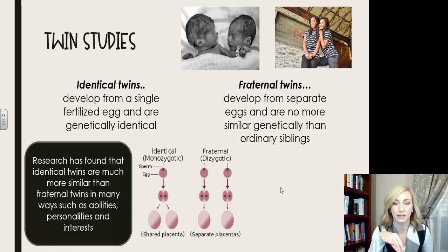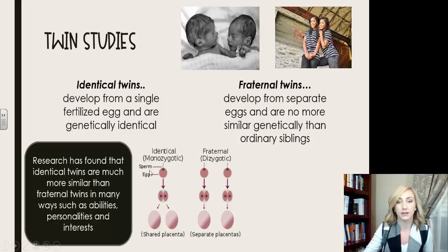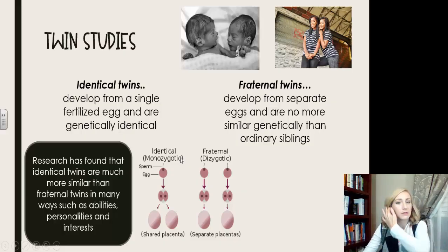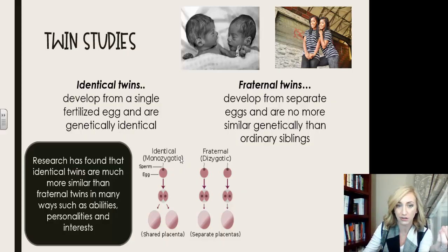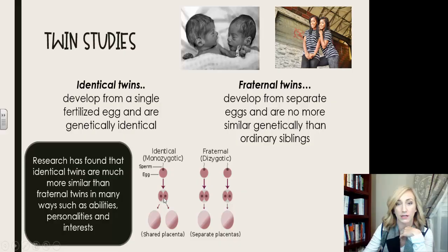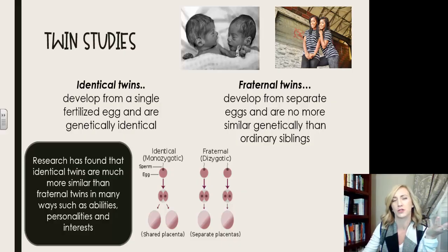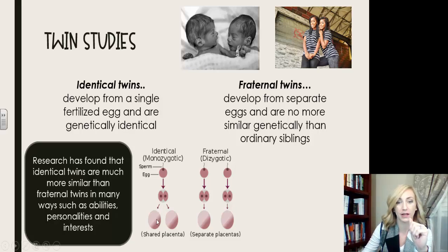Let's talk about twin studies. First, we have to know the difference between identical twins and fraternal twins — this diagram in the middle of the screen will help you most. Identical twins develop from a single fertilized egg and are genetic clones of each other. They are genetically identical, called monozygotic — one egg, one sperm — that splits, and they share a placenta because they came from the same egg.